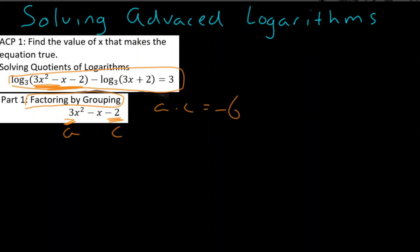Now, from there, we're looking for two factors of negative 6 that actually add up to be negative 1. So if you were to choose negative 3 and positive 2, we could say negative 3 times 2 is negative 6, and negative 3 plus 2 is negative 1. And those are, in fact, the numbers that we're looking for.